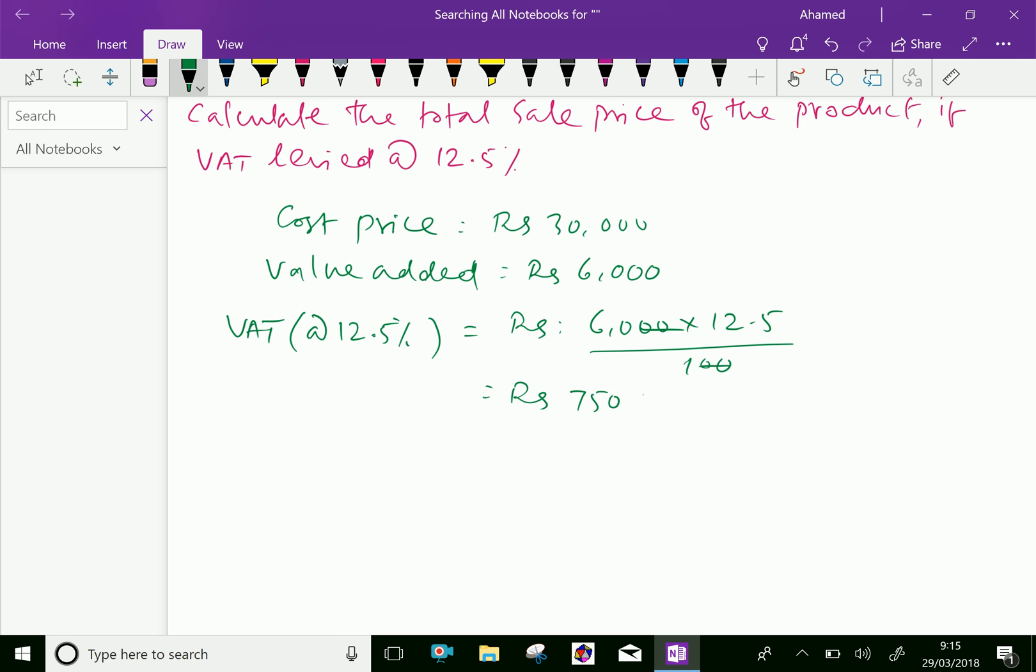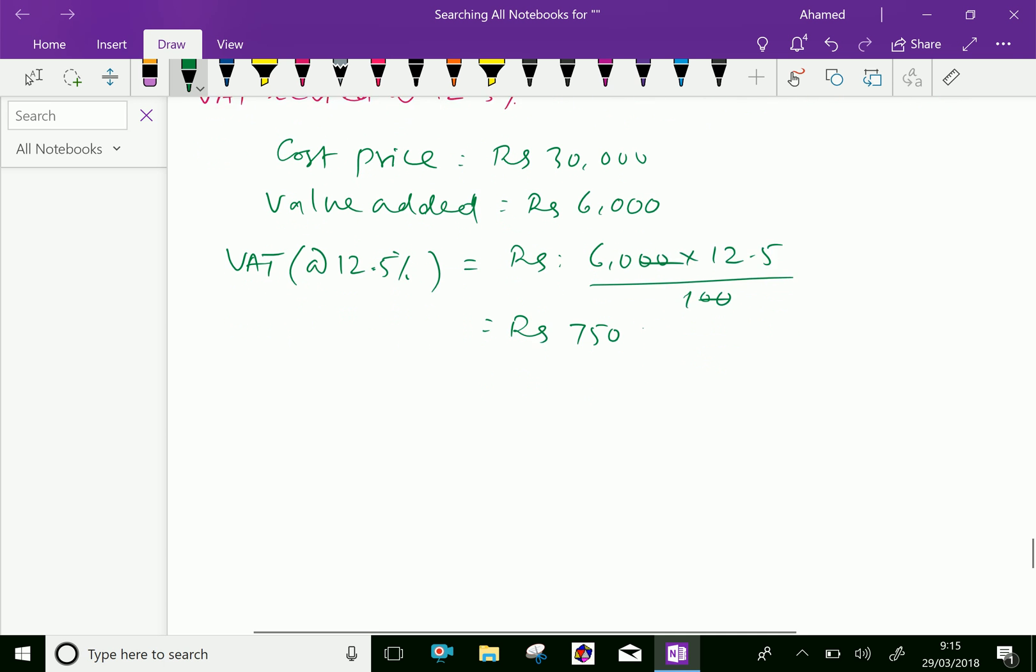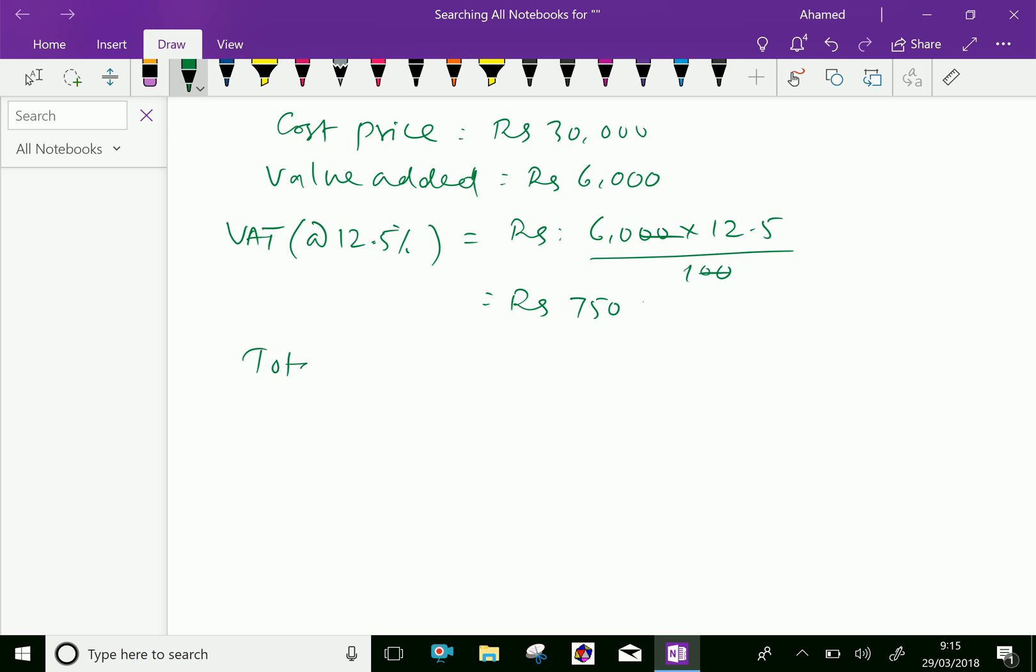Now, total sale price equals Rs. 30,000 plus VAT is 750, which gives Rs. 30,750.